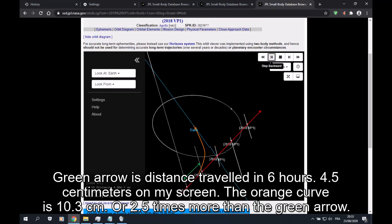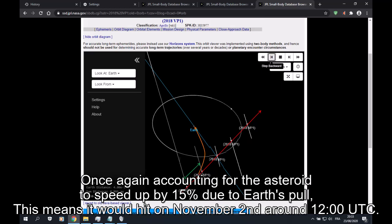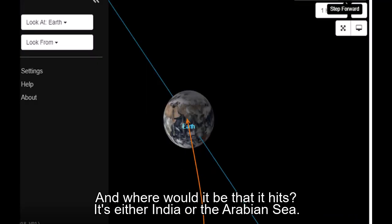The orange curve is 10.3 centimeters, or 2.5 times more than the green arrow. Once again accounting for the asteroid to speed up by 15% due to Earth's pull, this means it would hit on November 2nd around 12 o'clock UTC. And where would it be that it hits? It's either India or the Arabian Sea.